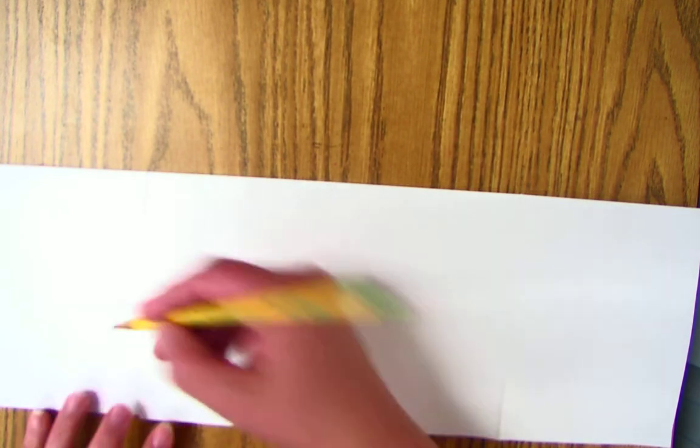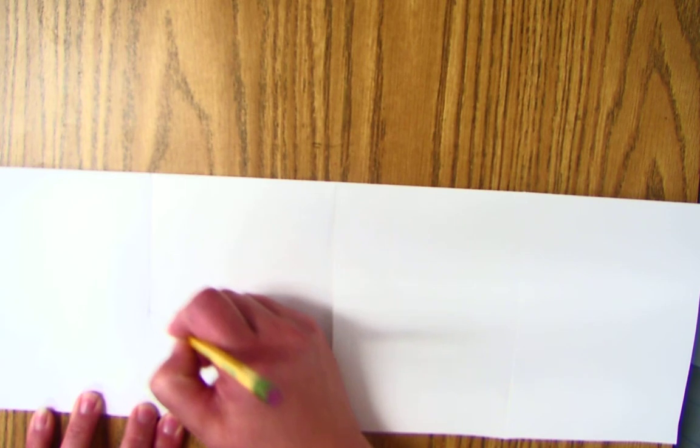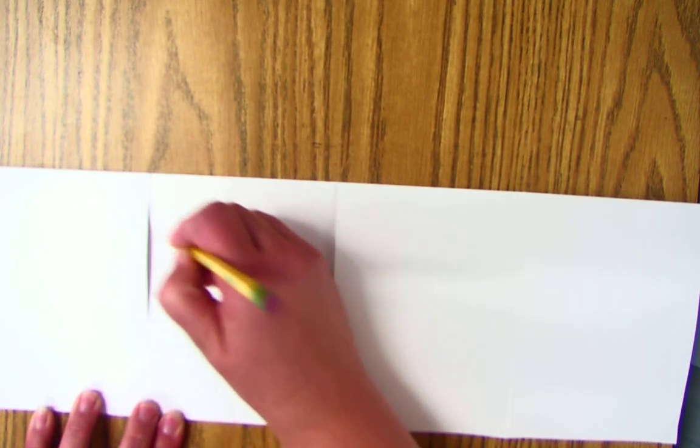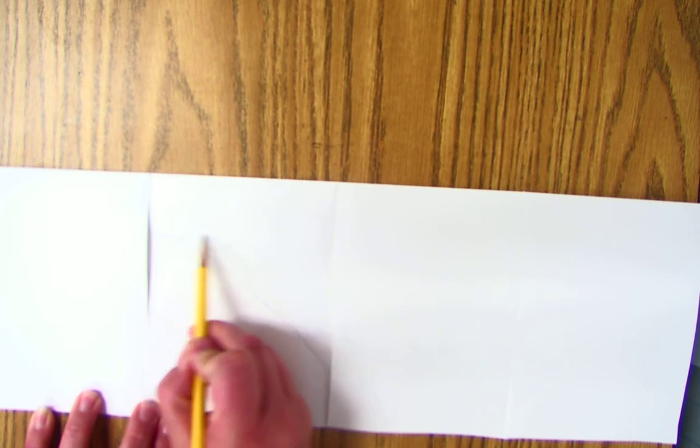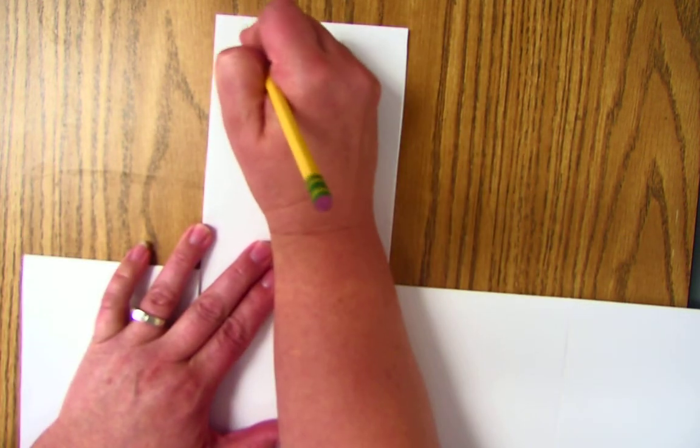But if I were doing Central Valley, I might draw farmland. So rows and rows of crops. Yes, and I might cut... there's no white showing on this.